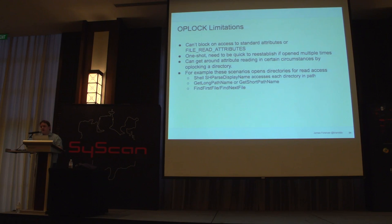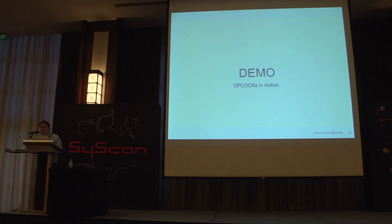There are a few limitations: you can't block access to attribute access. But there are tricks — you can do op locks on directories, so whenever you open a directory for listing it opens with read access, and you can abuse that as well. There are examples on our issue tracker where I've used this for information disclosure and as a timing signal. Let me do a quick demo to prove it actually works.